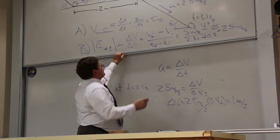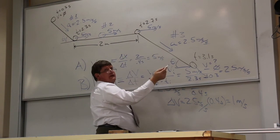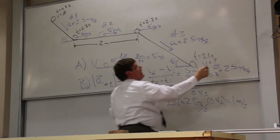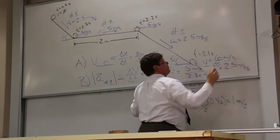So if it's going 5 meters per second up here, and it has a change on the ramp of 1, that means its final is going to be 6 meters per second.